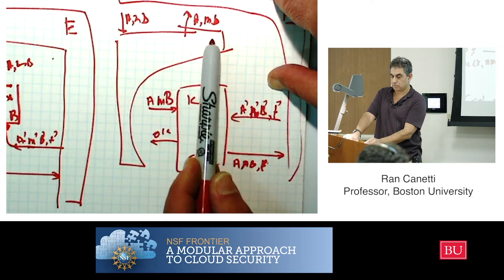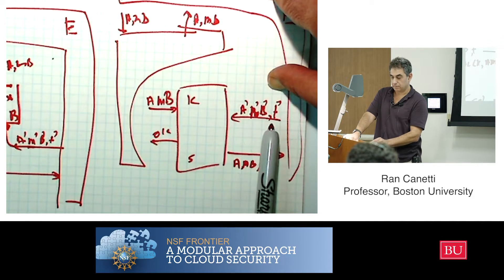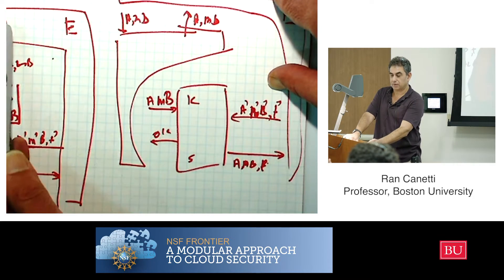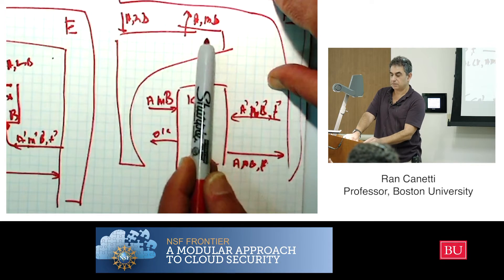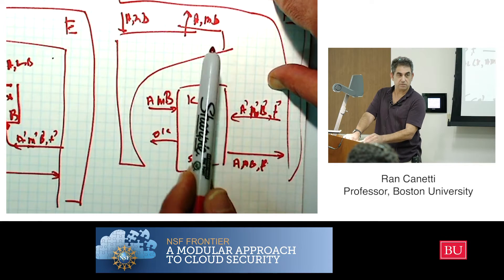So the only case in which it will be different is the case in which it actually managed to generate a forged tag here, and then in the real system it will see the forgery come out, and in the ideal system it will still see the original message come out, not the forgery. That's going to be the difference.